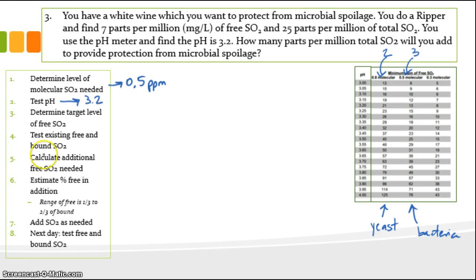So then we can determine the target level of free SO2. So go to our chart. There's 3.2. We'll look in column three because that's our protection at 0.5 molecular. And we need 13 parts per million total free SO2. Well, we already had done a ripper. We'd found that 7 parts per million was free. So now we have 7 parts per million. We need 13 parts per million. So we need to add 6 parts per million free.